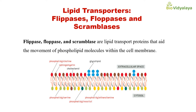Lipid transportases — flippases, floppases, and scramblases — are lipid transport proteins that help the movement of phospholipids within the cell membrane. That means they change the position of phospholipid molecules within the cell membrane, helping the movement of phospholipids from one monolayer to another monolayer.